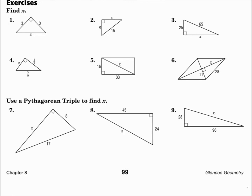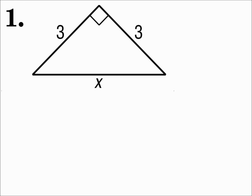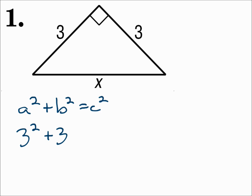Find x. Here we have a right triangle. We know two of the legs, and we're looking for the hypotenuse. So use the Pythagorean Theorem: a squared plus b squared equals c squared. Remember, a and b are always the legs, and c is the hypotenuse. So a and b will be 3. 3 squared plus 3 squared equals x squared.